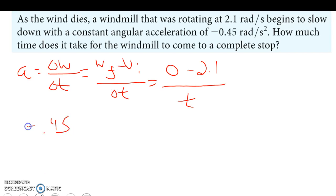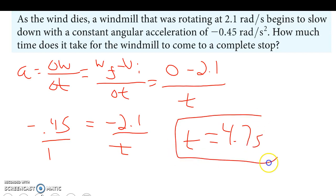We're going to take -0.45 equals -2.1 over t. Hit this over 1, cross multiply it. If I solve for t, it'll take 4.7 seconds for this windmill to come to a complete stop. Very similar to other things we've done. This is just we're talking angular, we're talking radians per second instead of meters per second, radians per second squared instead of meters per second squared. But the relationship between velocity and acceleration is the same.